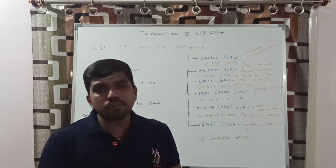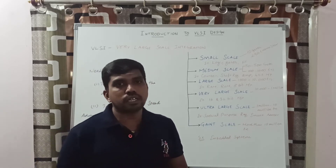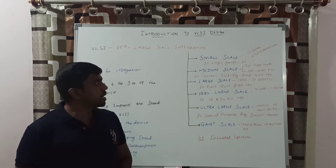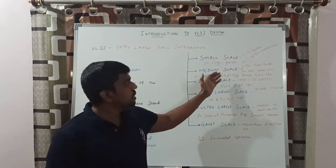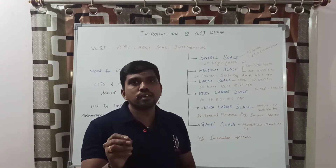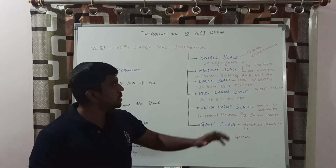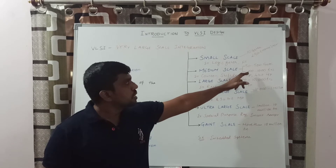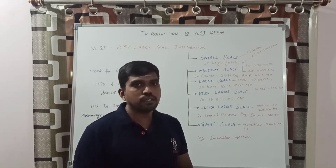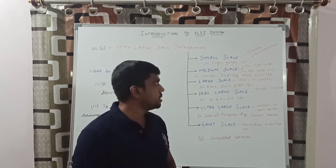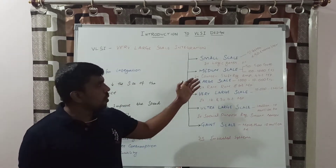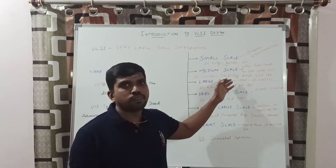The application of Small Scale Integration is to develop logic circuits, logic gates, and flip-flops. The second one is Medium Scale Integration (MSI). In MSI, 50 to 500 number of gates and 100 to 1000 number of transistors are used in a single chip. The application of MSI is developing counter circuits, shift registers, and 4-bit microprocessors and amplifier circuits.